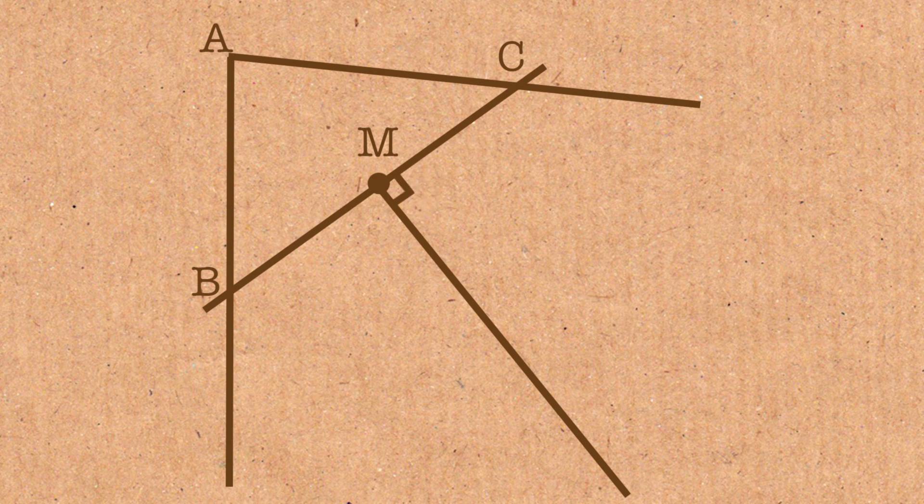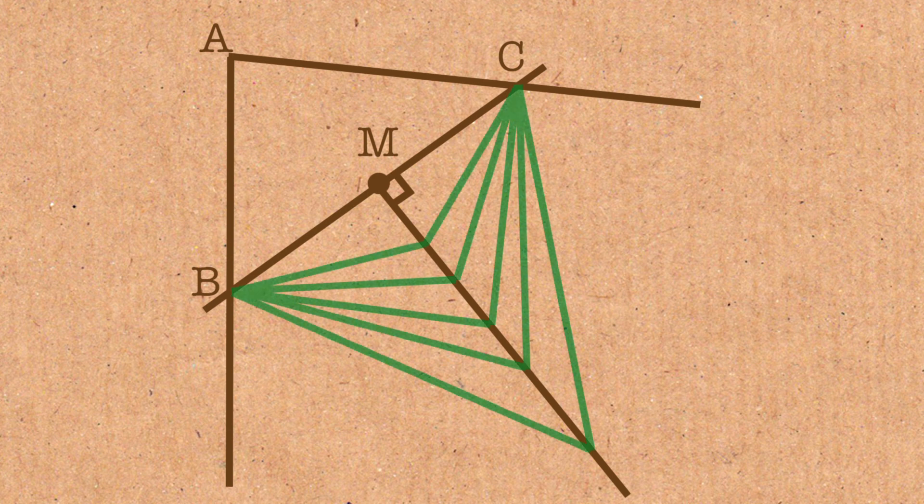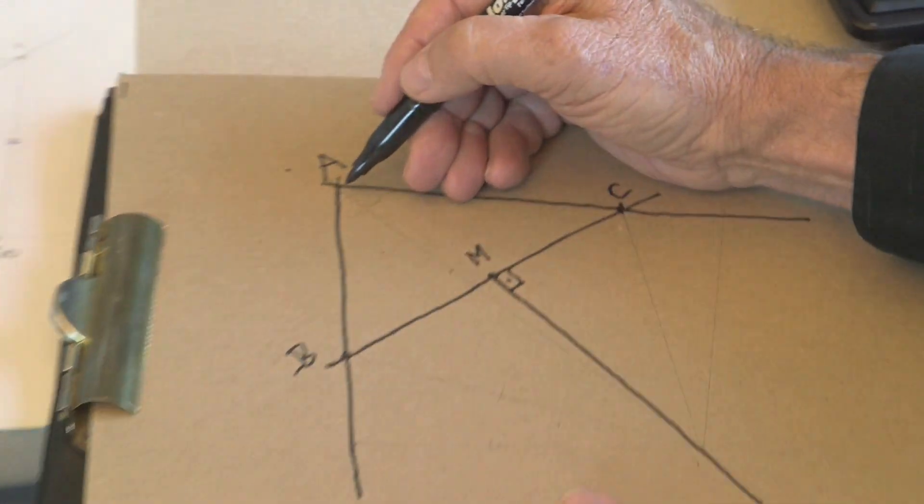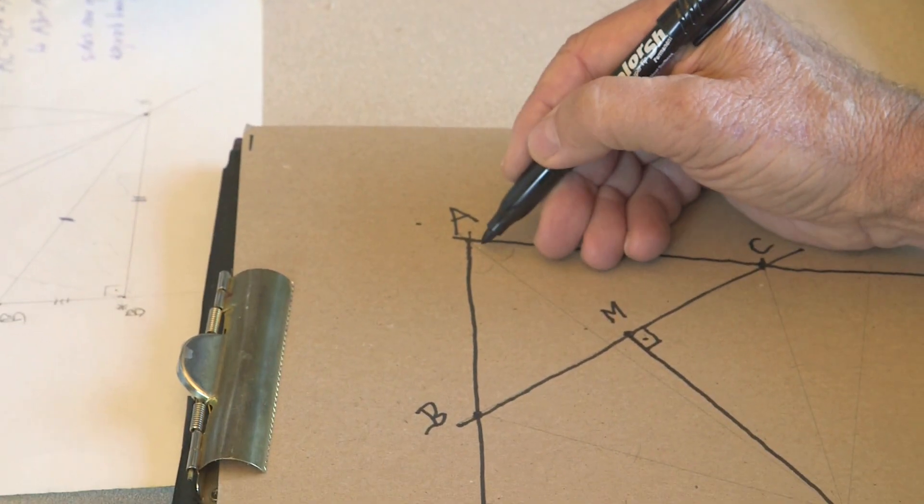Now you know that this line is the locus of all the points that are equidistant from point B and from point C. I'm going to draw another extra line, and that is the angle bisector coming out of A here.